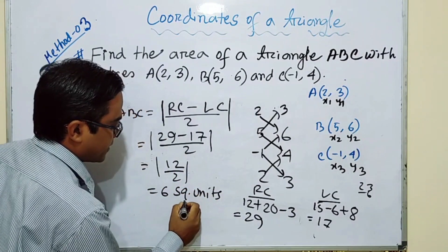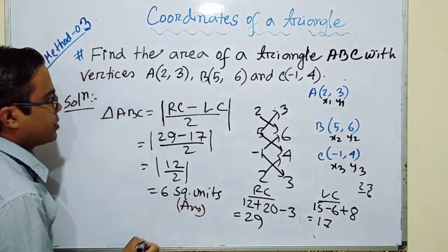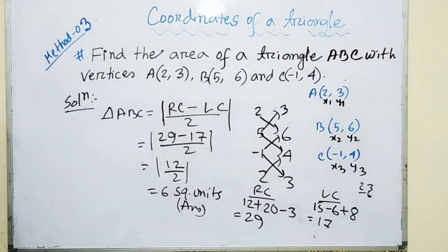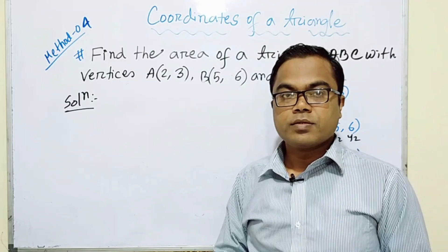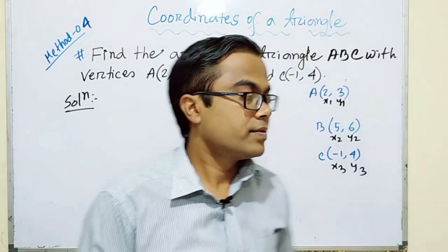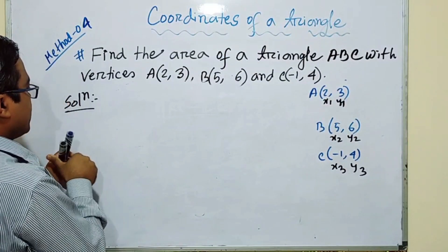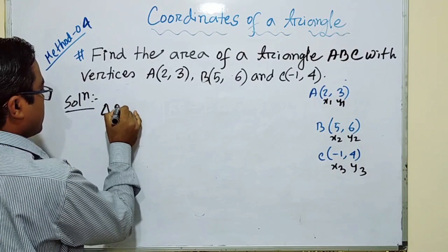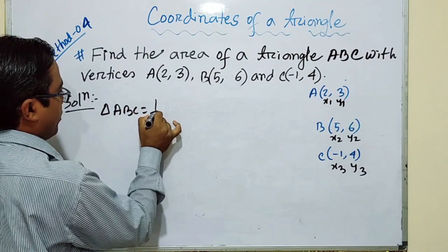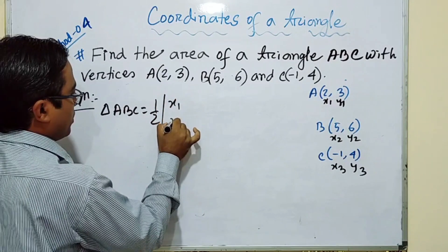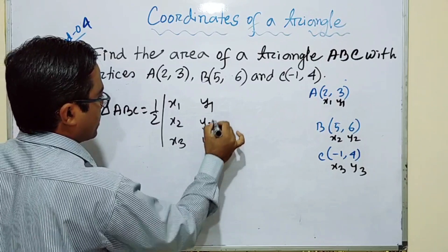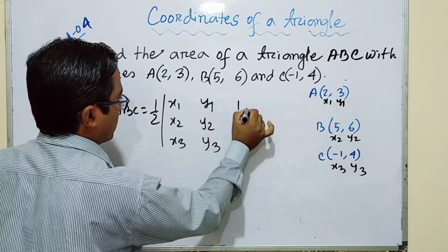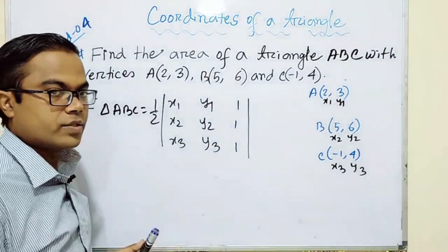That's very interesting — same answer again! Now the last method. We usually use Method 4 for higher maths, for HSC students. Area of triangle ABC = half of the determinant with rows x1, x2, x3 and y1, y2, y3 and 1, 1, 1. This is called the determinant method.